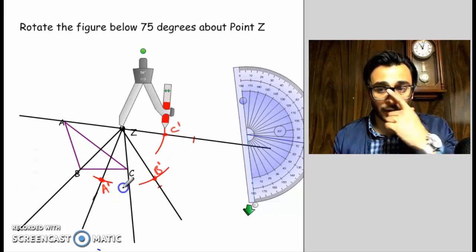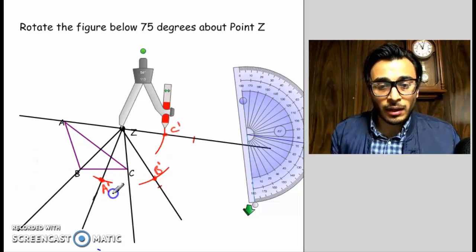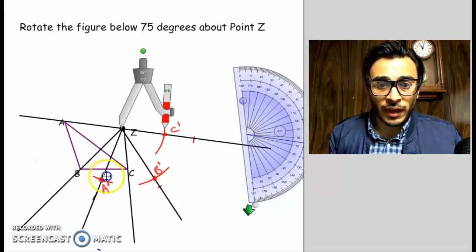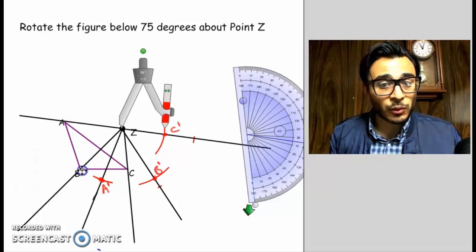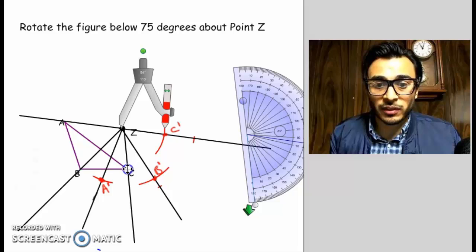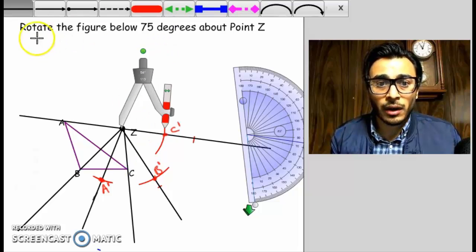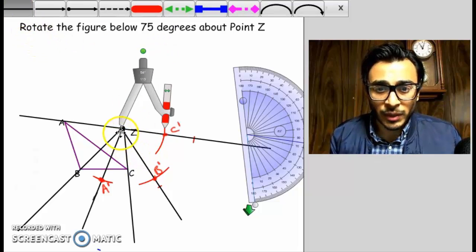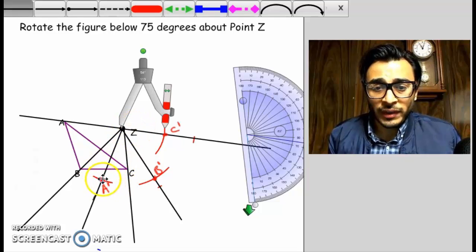Notice that the new points that get rotated: the rotation of A is point A prime, the rotation of B is B prime, the rotation of C is C prime. Those are like our new points. That's how we call them to distinguish them from the original points.